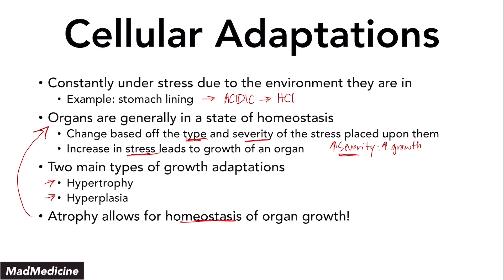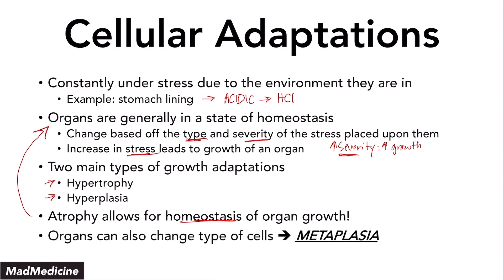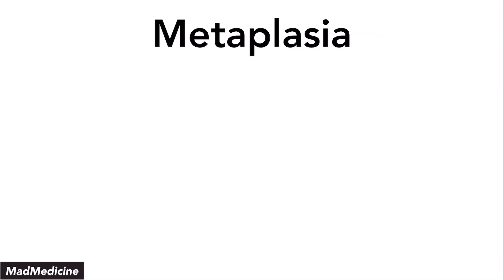But what happens when you change the type of stress? When you change the type of stress our body is being put under from one type to another, we also have a cellular adaptation that can occur, and that is called metaplasia. In this condition, organs can also change the type of cells they have to accommodate that stress.